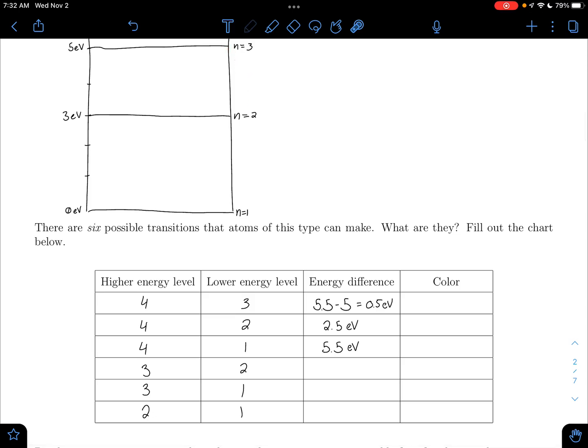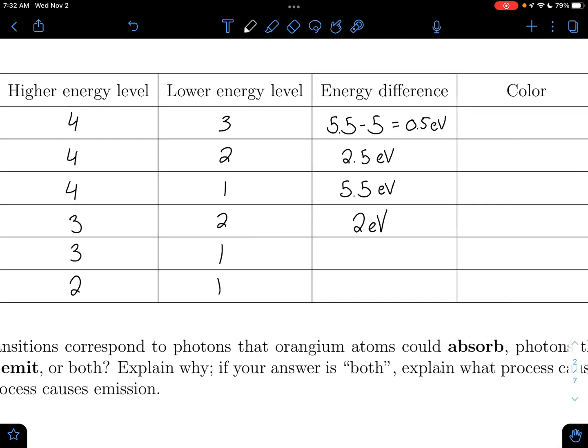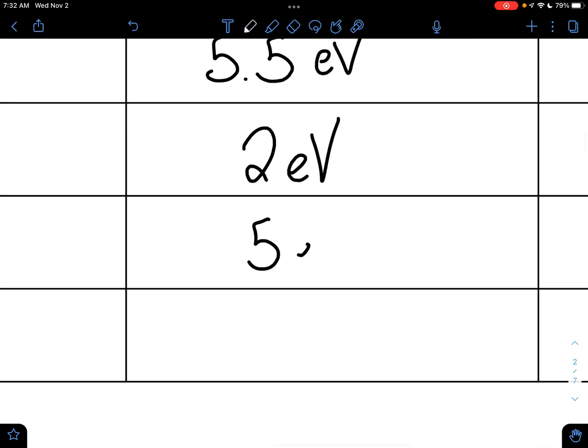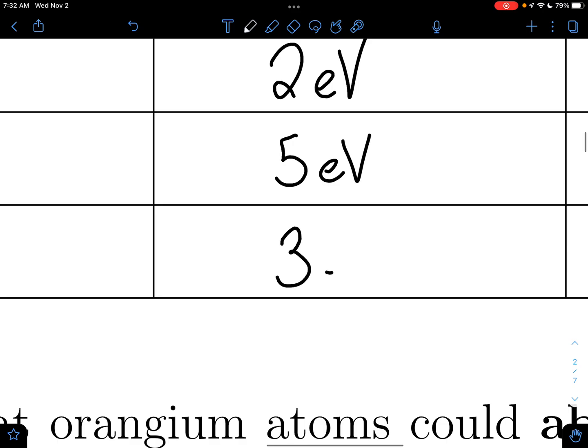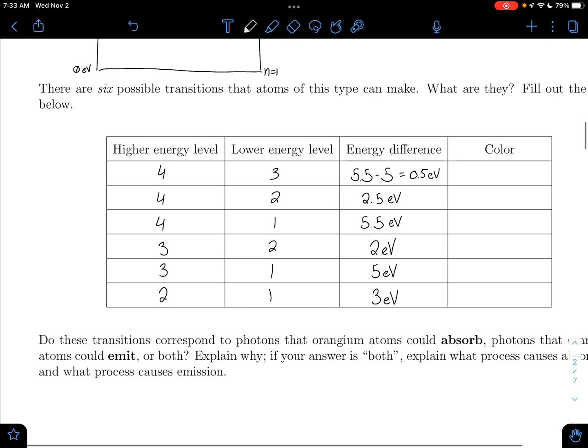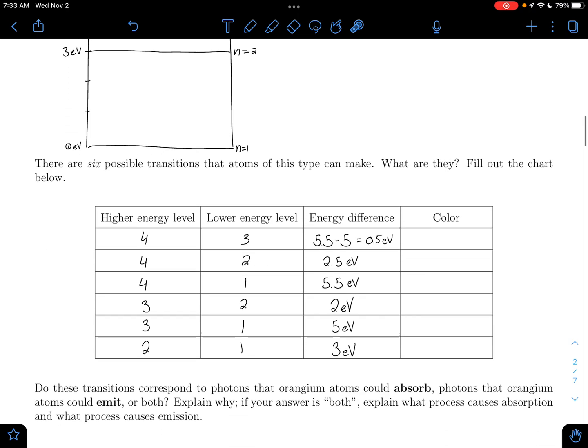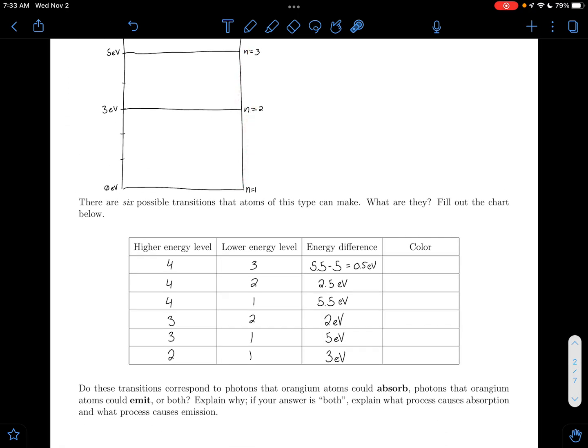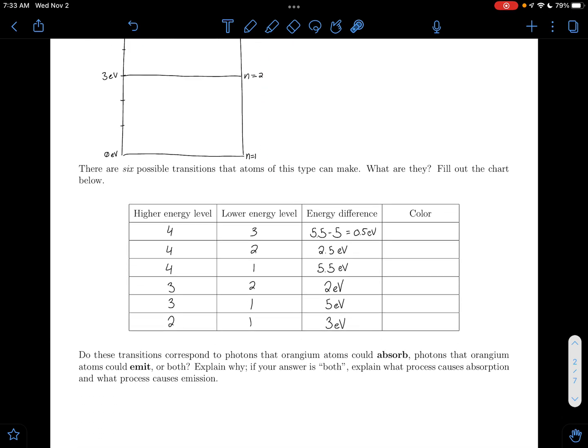3 to 2, it's going to be 2 eV. 3 to 1, that's going to be 5 eV. And 2 to 1, that's going to be 3 eV. I have all these memorized by now. So again, this is just our difference in height between the floors. If I'm going up, it's going to be a positive. I'm increasing my height. I'm going down, I'm decreasing my height by that same amount.